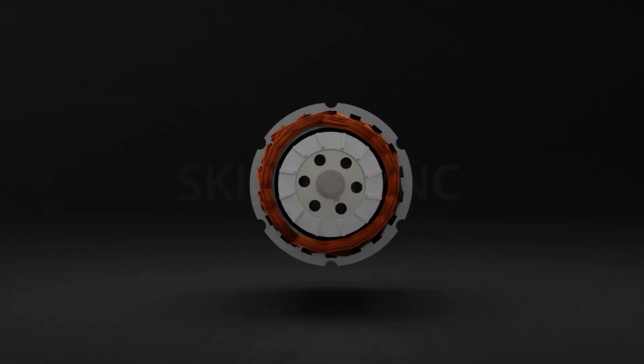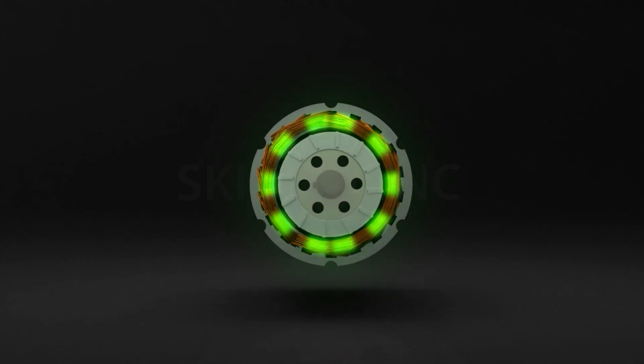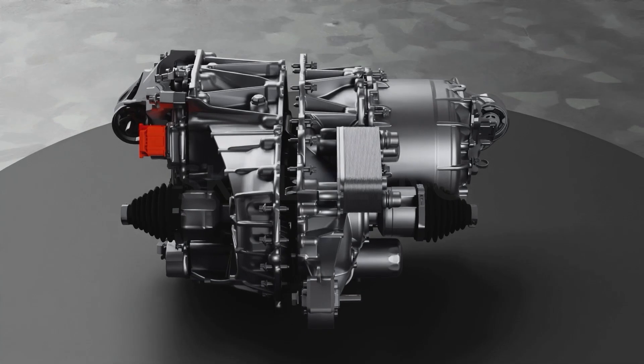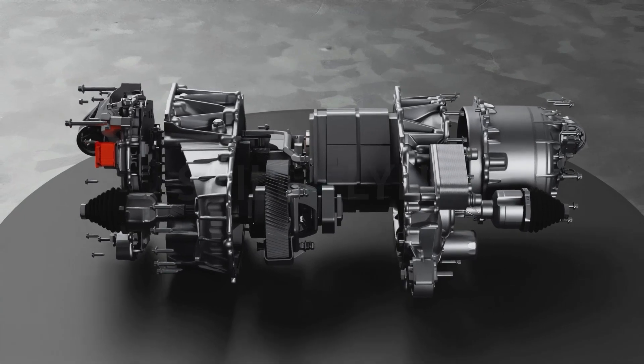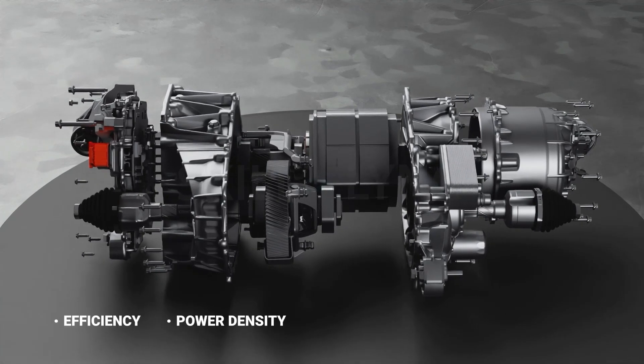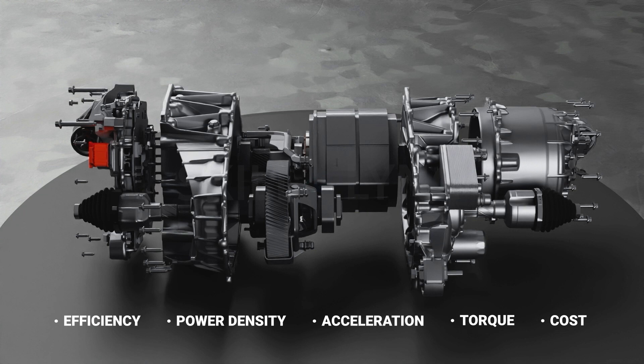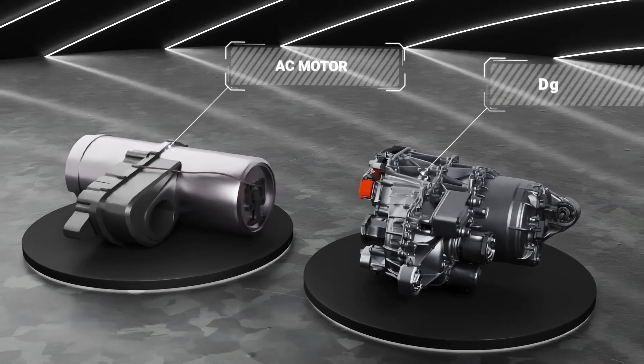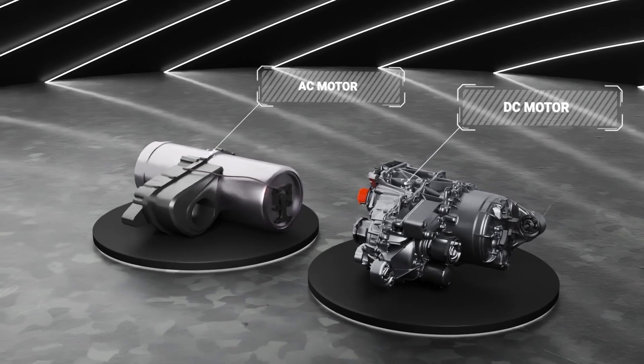Electric motors are machines that convert electrical energy into mechanical energy. EV manufacturers choose the ideal motor for their models by considering its efficiency, power density, acceleration, torque and cost. They come in two main types, DC and AC motors.